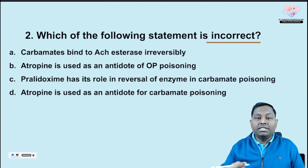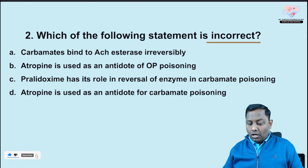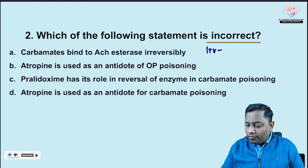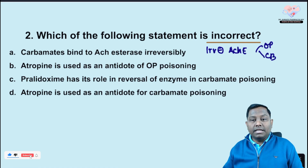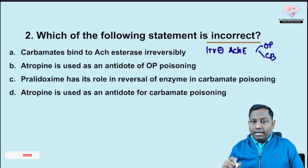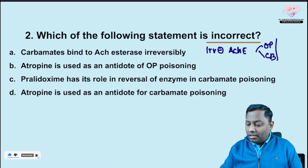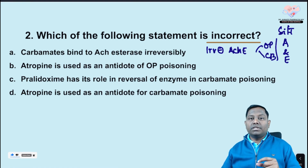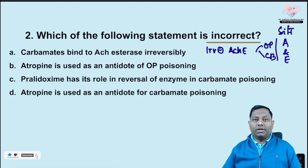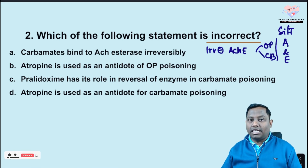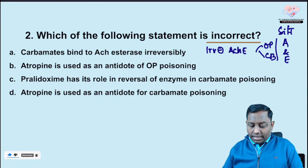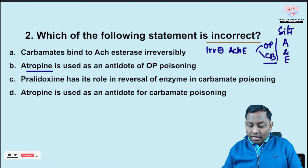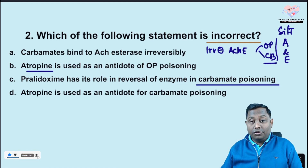The second question asks which statement is incorrect about organophosphate and carbamide — an all-time favorite of examiners. Option A states carbamides bind to acetylcholinesterase irreversibly. Both organophosphates and carbamides are irreversible inhibitors of acetylcholinesterase. They bind at the anionic and esteratic sites. If either site is occupied, the enzyme fails to metabolize acetylcholine. Option B — atropine is the antidote — is correct for both organophosphate and carbamide poisoning.